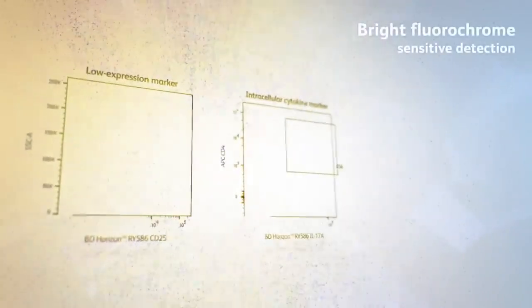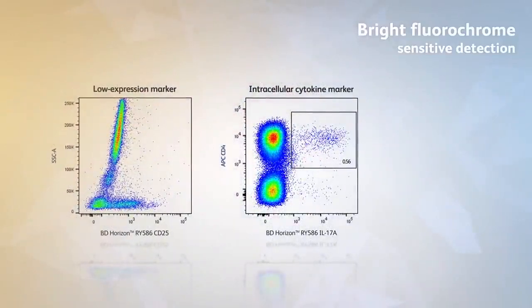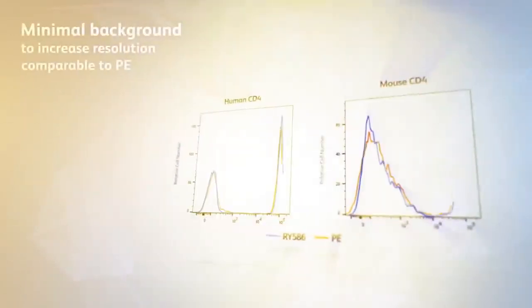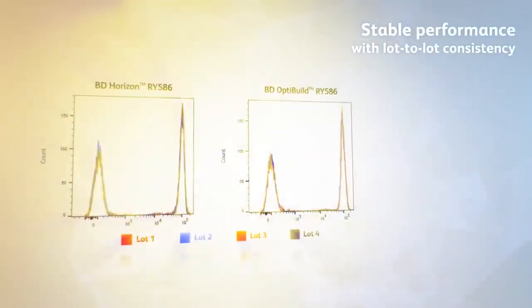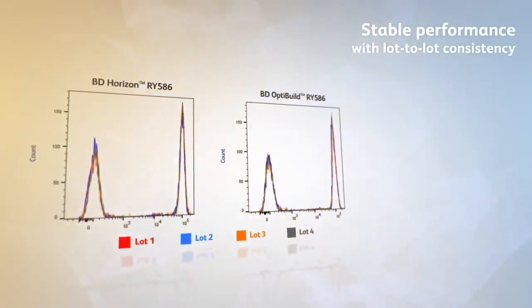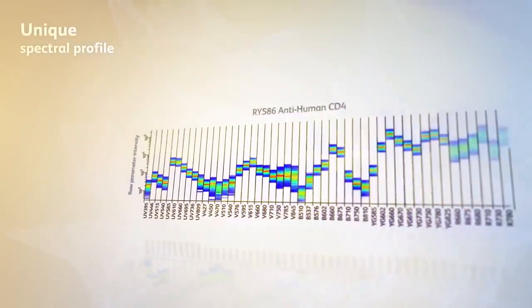It's a bright fluorochrome supporting the detection of low-expression surface and intracellular markers with minimal background and stable reagent performance with lot-to-lot consistency across made-to-stock and BD OptiBuild on-demand products with a unique spectral profile.